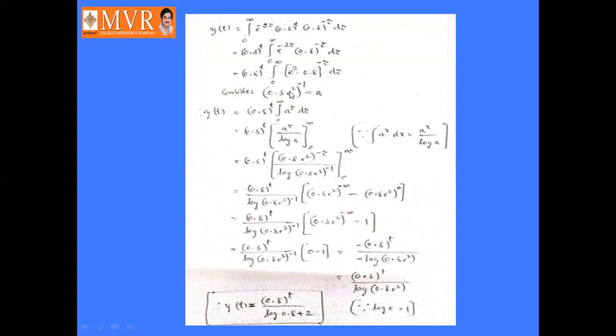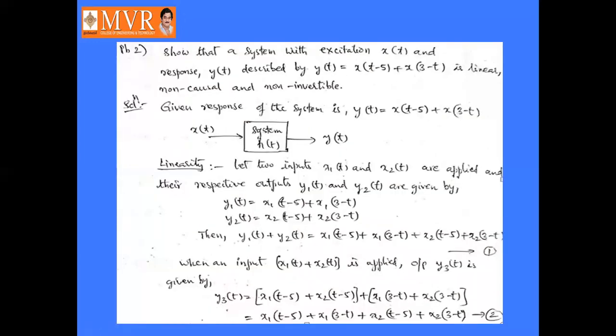Evaluating with limits 0 to ∞ and substituting a = (0.8 · e^2)^(−1), y(t) becomes (0.8)^t / log(0.8 · e^2), which simplifies to (0.8)^t / (log(0.8) + 2·log(e)). Since log(e) = 1, y(t) = (0.8)^t / (log(0.8) + 2). This is the output response y(t) for the given H(ω) and x(t).